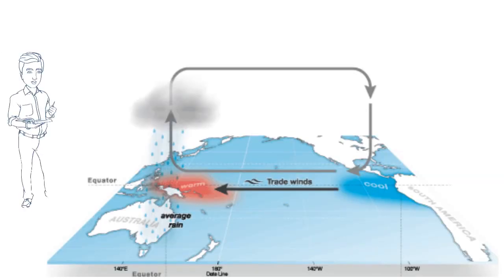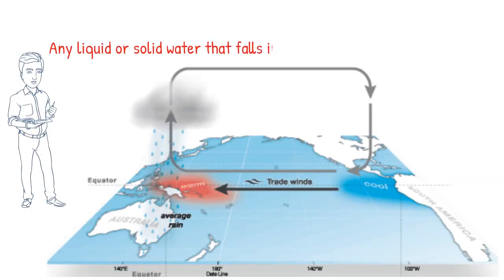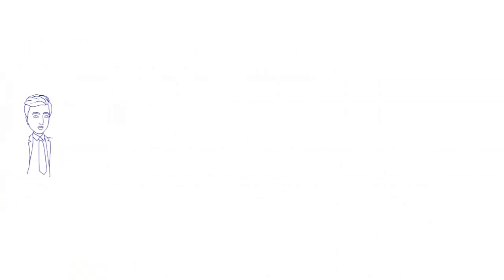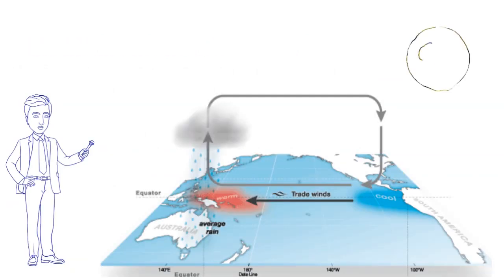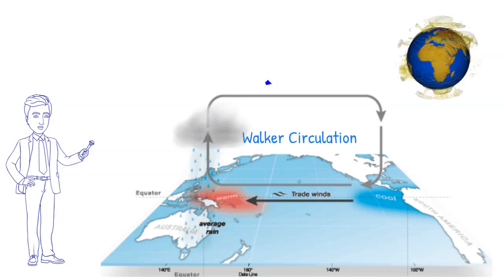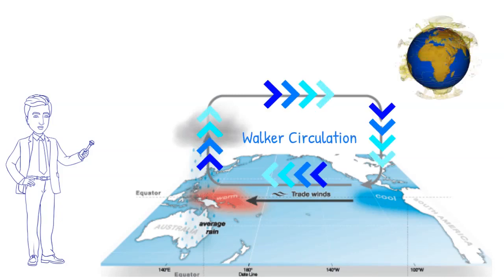But when the clouds can't hold the water anymore, it falls back to the earth as hail, rain, or snow — also known as precipitation. This pattern of air rising in the west and falling in the east in a clockwise motion is called the Walker Circulation.